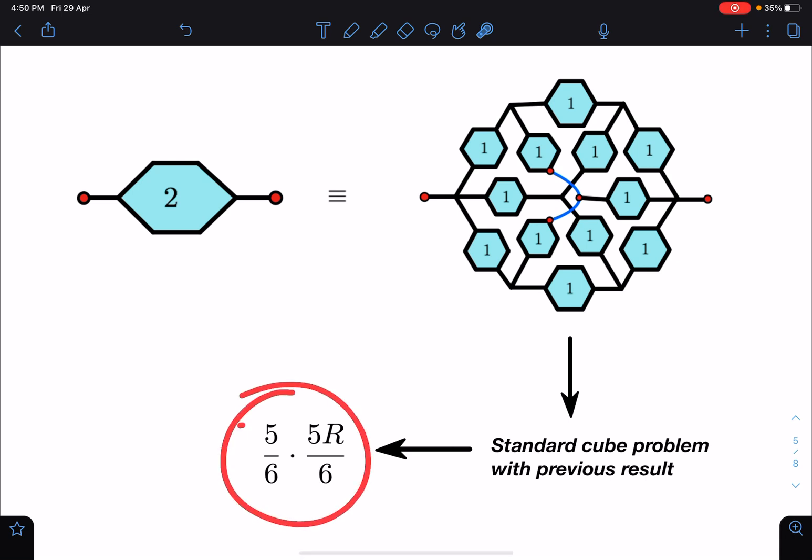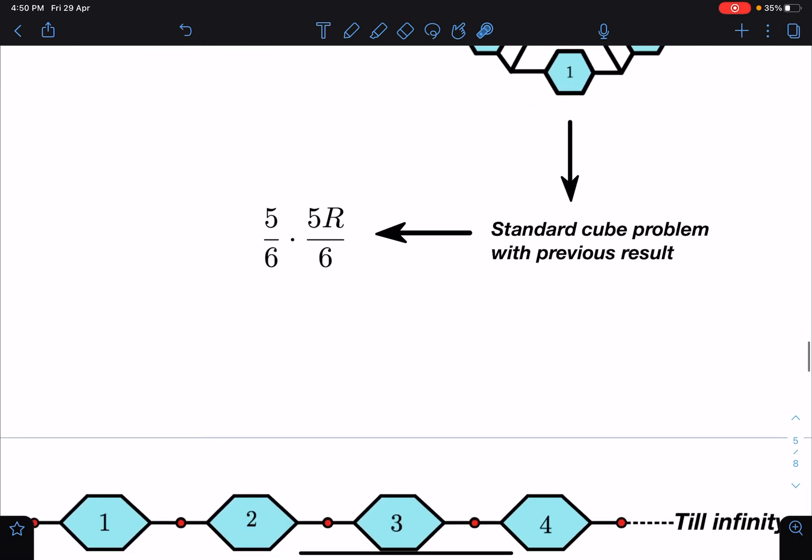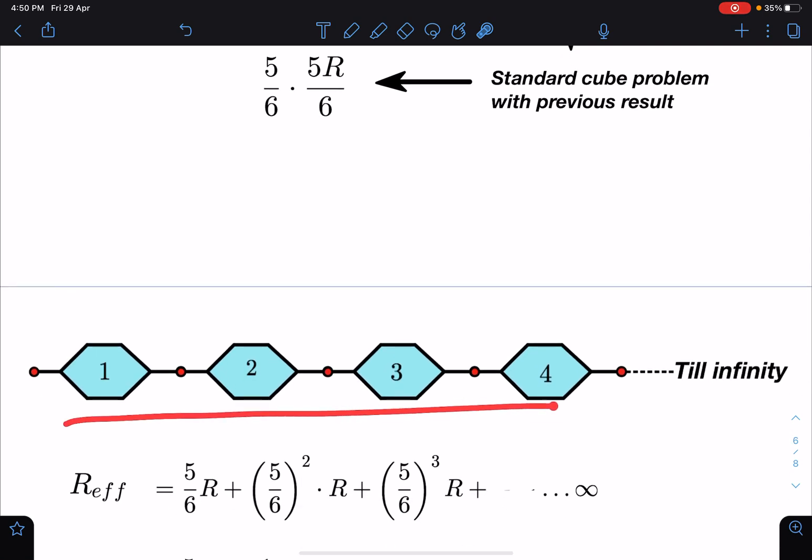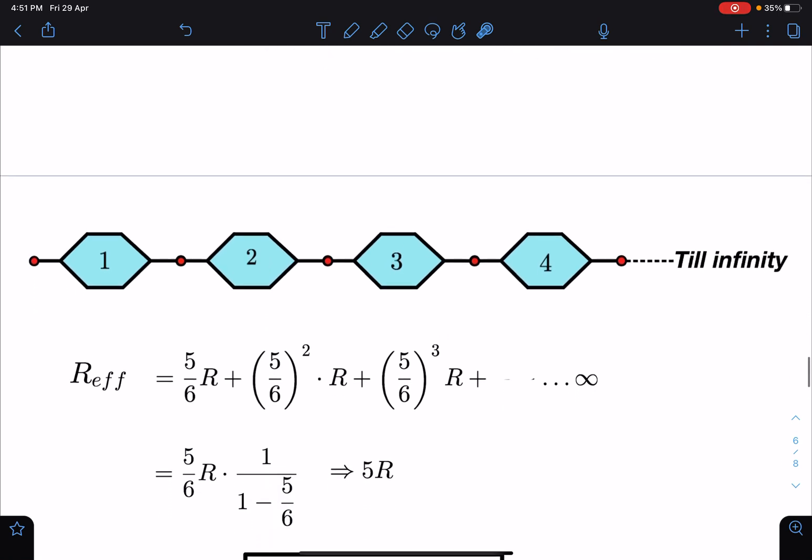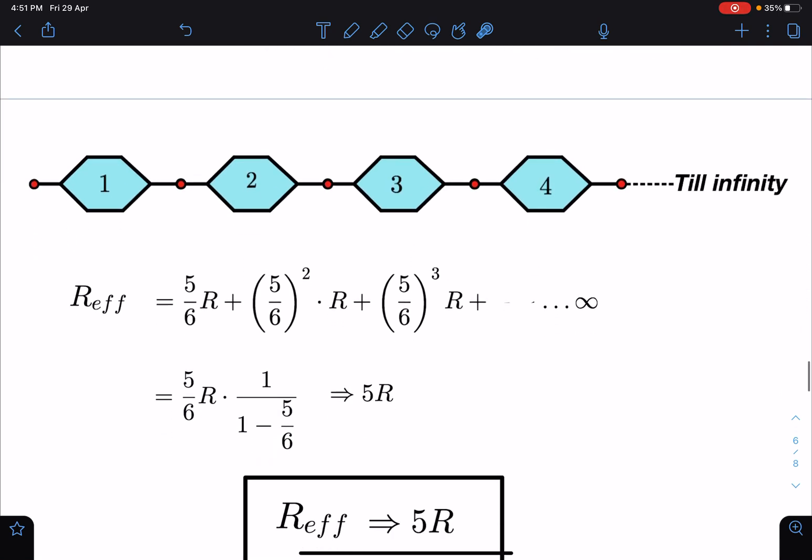So like this we can add here 1, 2, 3, and 4 - so 5R by 6, (5 by 6)² times R, (5 by 6)³ times R till infinity we have to go. So infinite GP sum we can write - 5R by 6 if you take common, 1 by 1 minus 5 by 6. So when you simplify this you will be getting this answer as 5R.